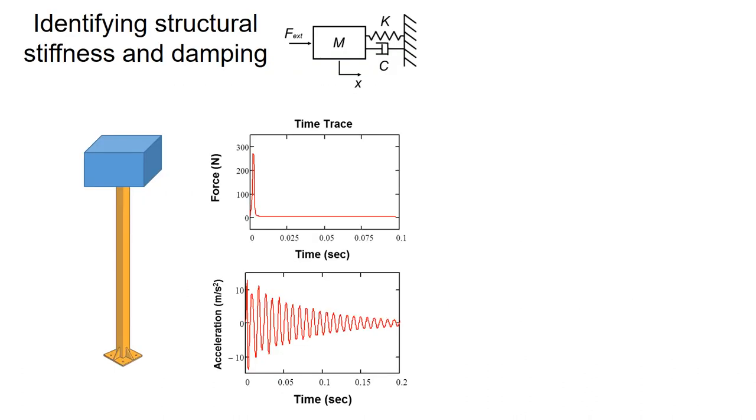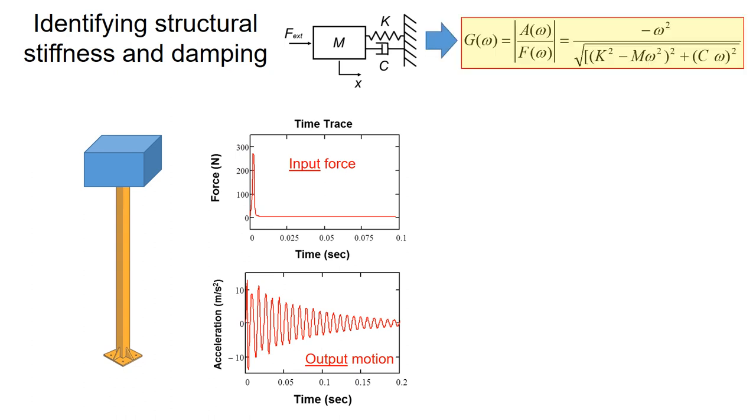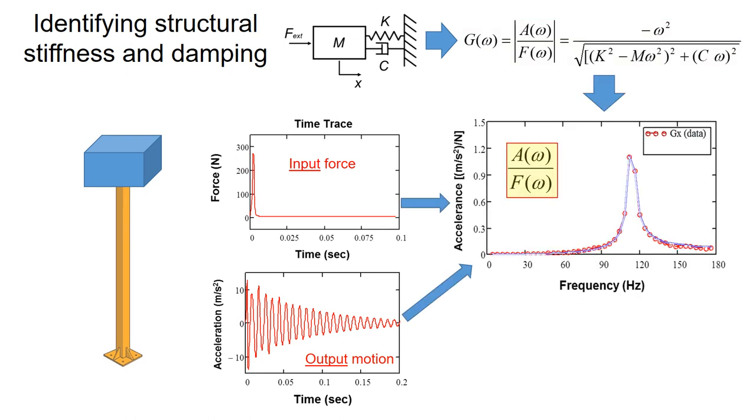Based on the force and acceleration data, you could extract the stiffness and damping. The input is the force and the output is the motion of the structure. For a single degree of freedom model, you can model the output over input in the frequency domain. Now, if you plot your A over F, output motion over force, in the frequency domain, the typical signal is shown on the right.